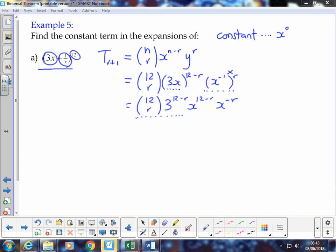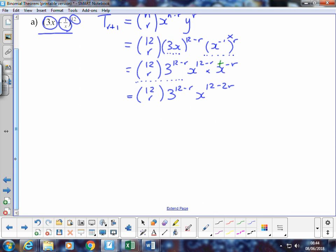Our numerical coefficients, and then we've got these terms in x, which we can combine. Remember we're multiplying x to the power of 12 minus r, multiplied by x to the power of negative r. We're going to add those two expressions together, and so that becomes 12 minus 2r. So in this case here, we're looking for a constant term, and what we're really looking for is therefore a power of x, which is 0.